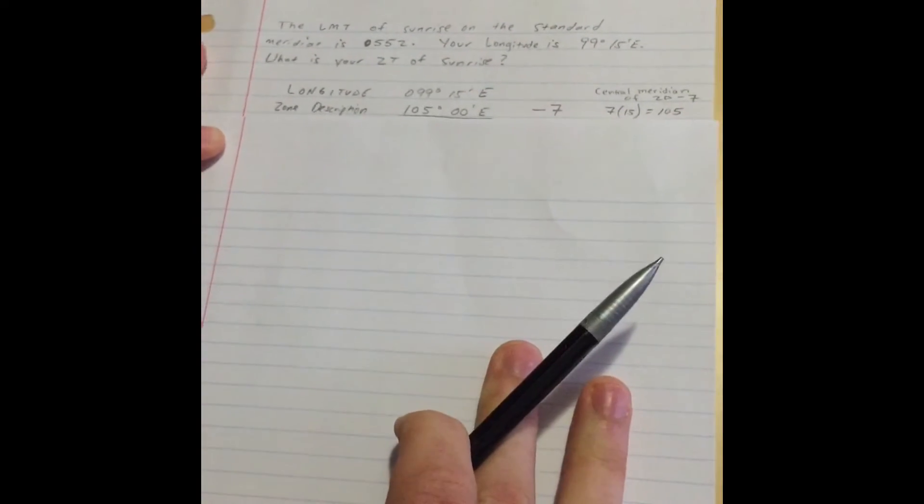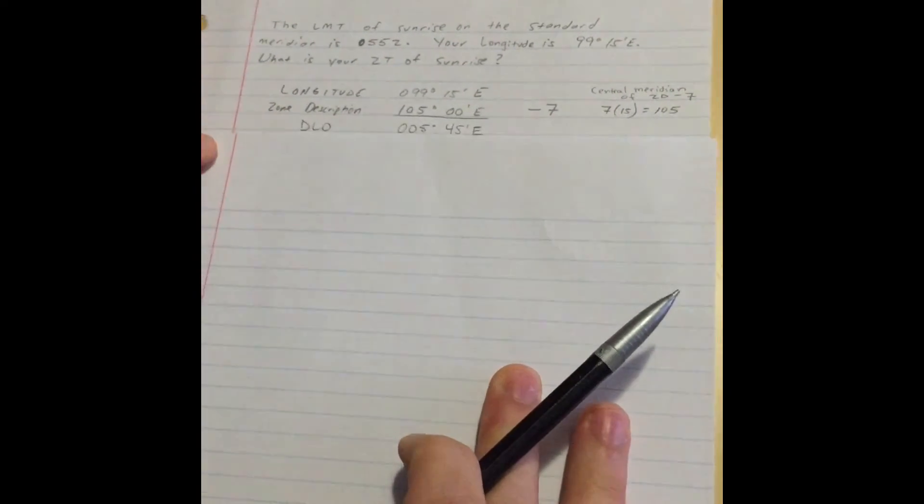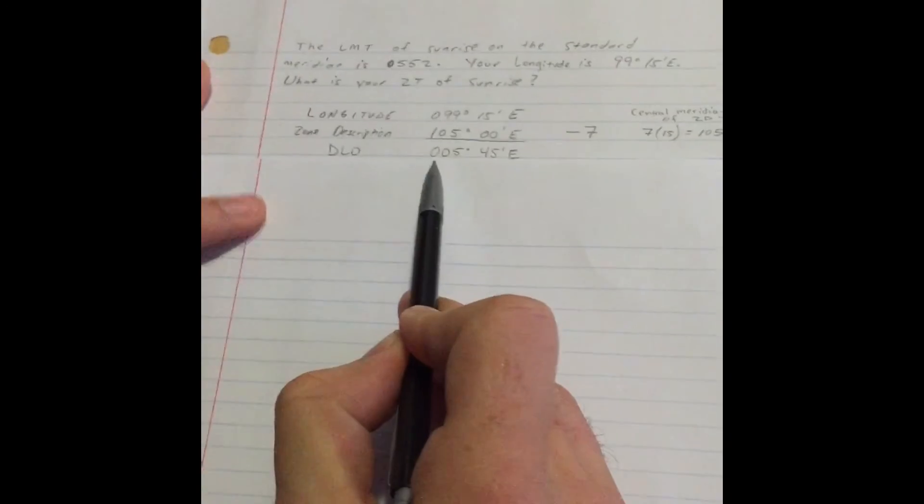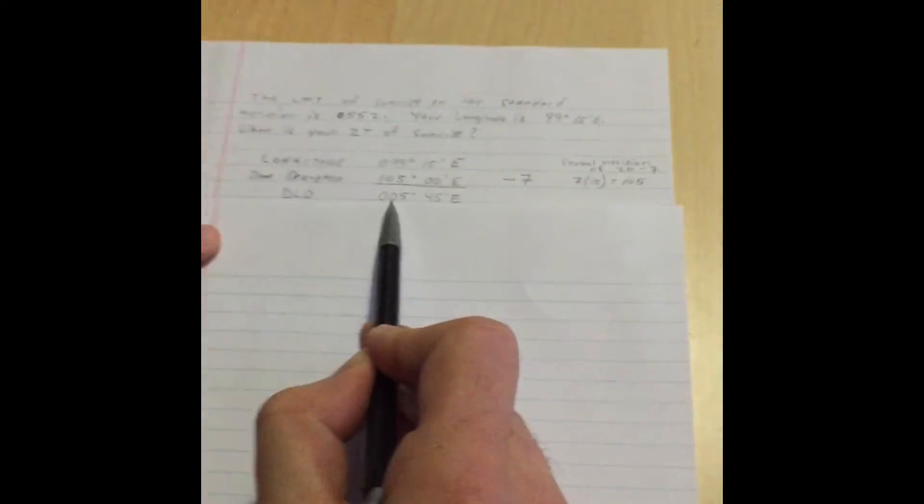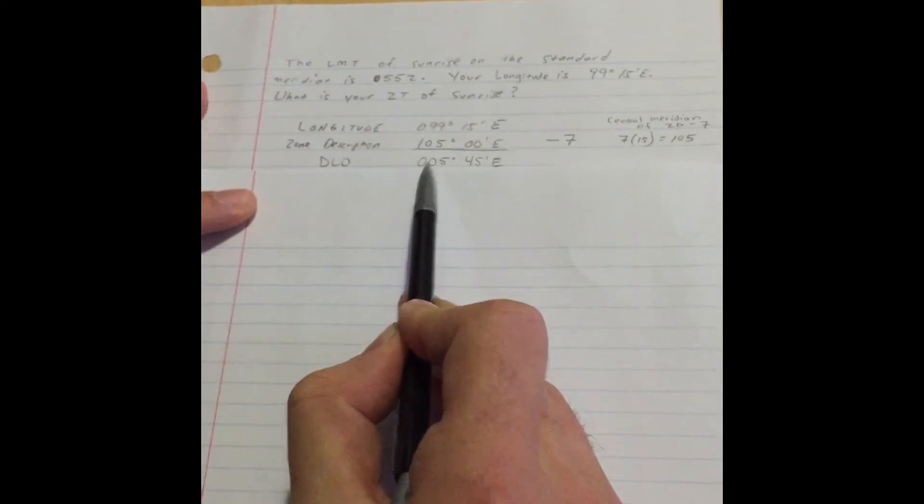Now, what we need to do next is take our difference of longitude, or as us mariners refer to it, the DLO. We find that the difference between the longitude and the zone description is 5 degrees, 45 minutes east.